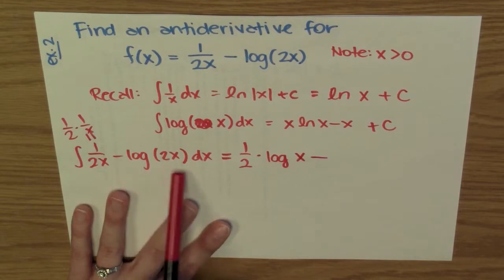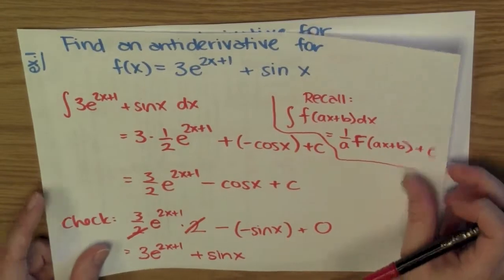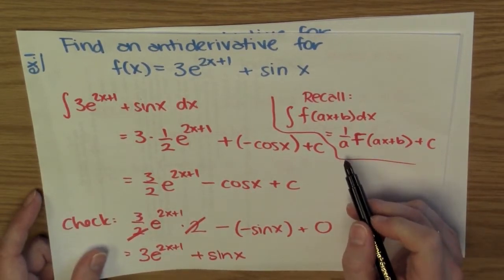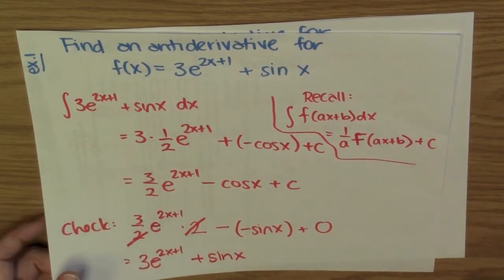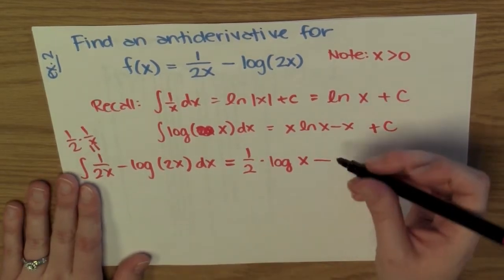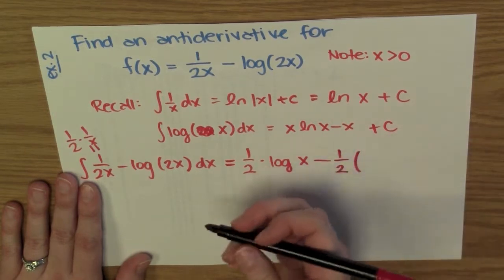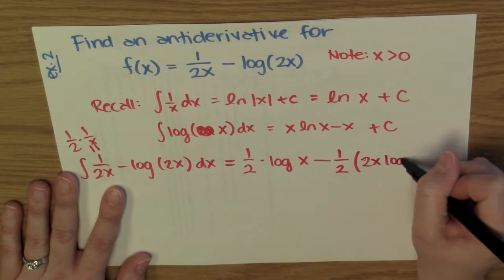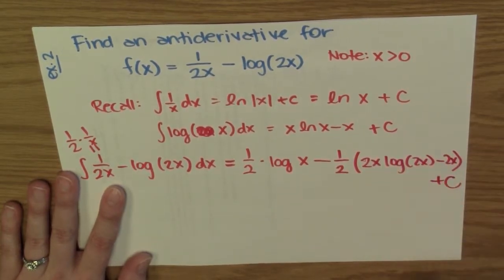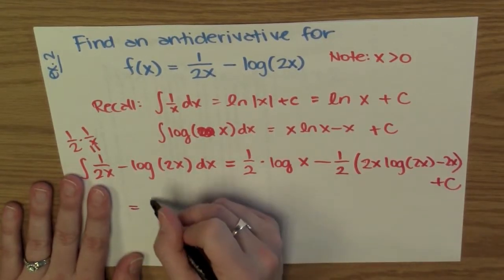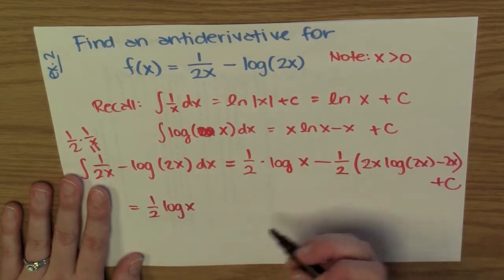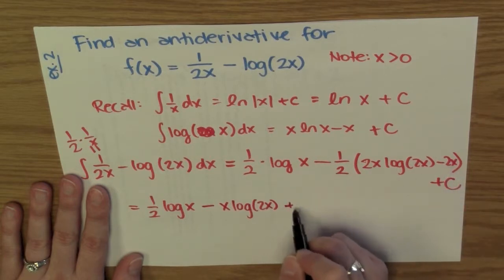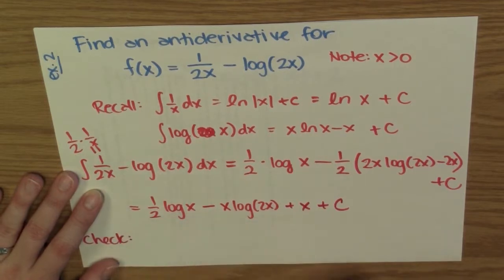Then I subtract, and for the log(2x) term I have the case of f(ax+b). Here a is 2 — there's no meaningful b to worry about. So I multiply by 1/a, which is 1/2, and then use the anti-derivative of the log function with 2x plugged in instead of x. That gives (1/2)·(2x·log(2x) - 2x), and then the whole expression has plus c. Cleaning up: I have (1/2)·log(x) - x·log(2x) + x + c.